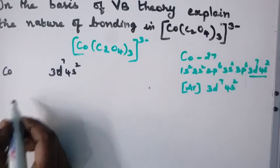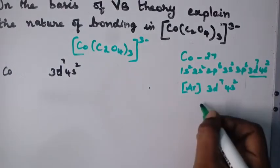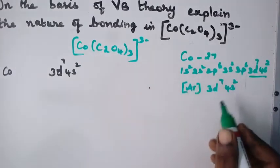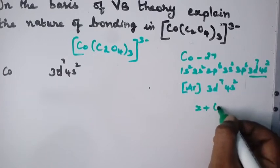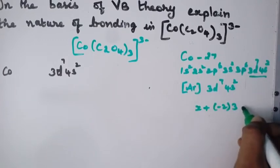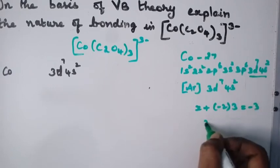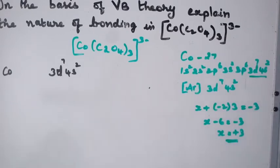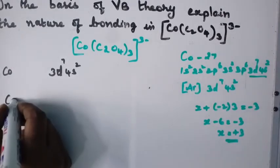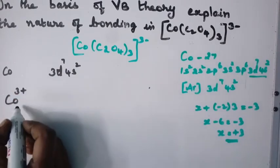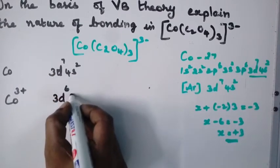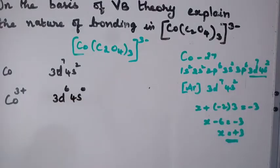Now find the oxidation number of cobalt. Taking cobalt as X and the oxidation number of oxalate as −2, with 3 oxalate ligands and overall charge −3: X + (−2)(3) = −3, so X − 6 = −3, giving X = +3. Cobalt is in the +3 oxidation state and has lost 3 electrons, making its configuration 3d⁶ 4s⁰.